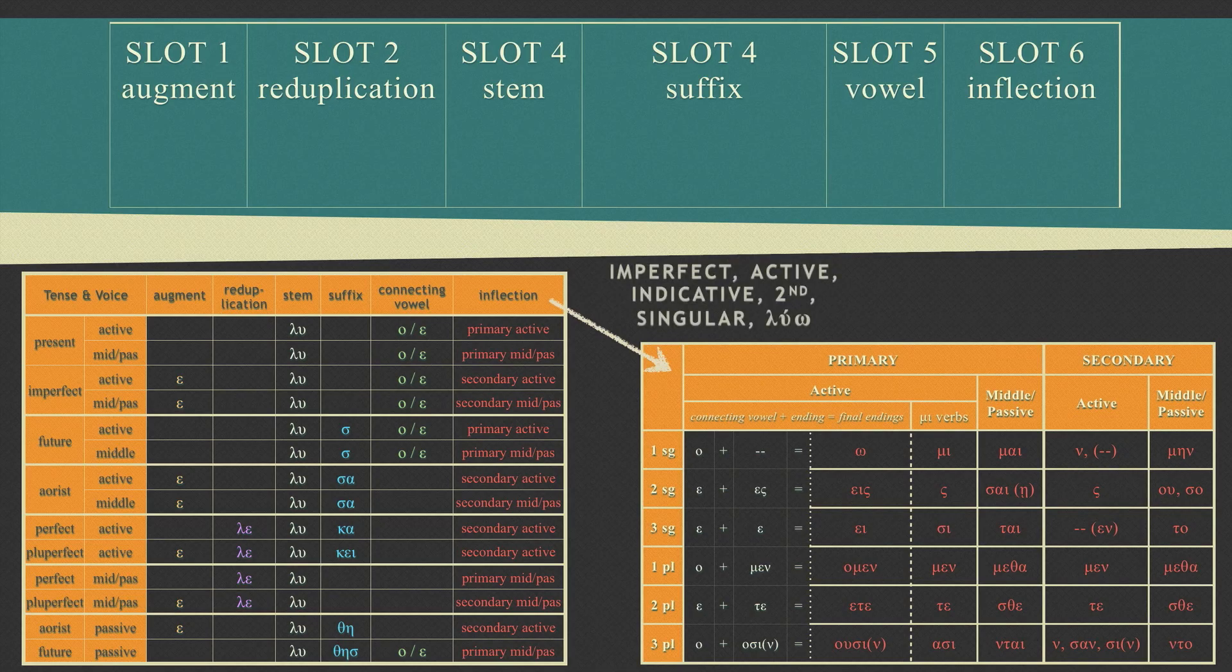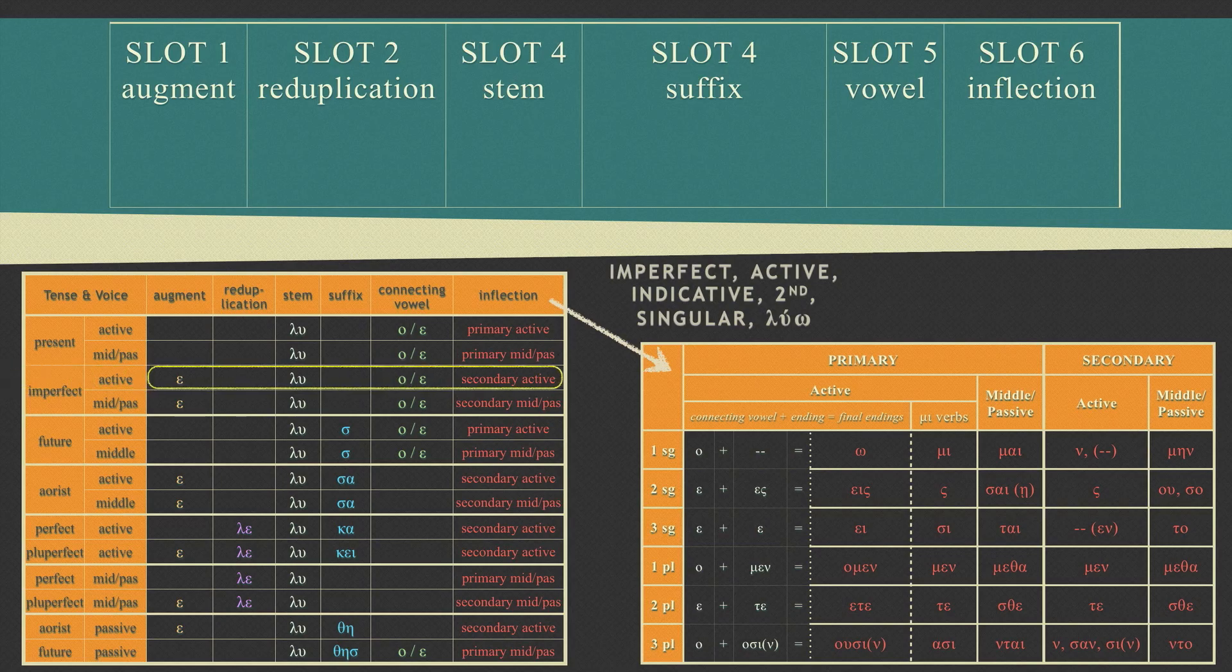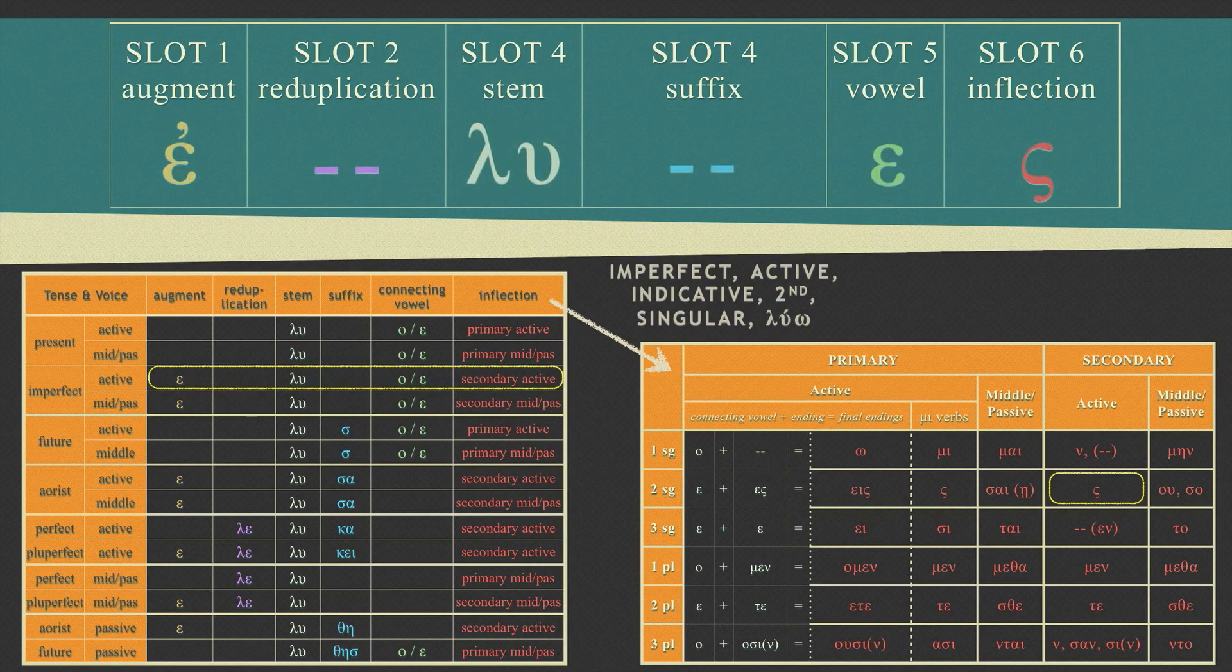What would an imperfect, active, indicative, second person singular form of Lua look like? Looking at our slot machine table, we see that the tense voice combination of imperfect active would build onto the stem by taking an augment, a connecting vowel, and secondary active endings. Looking at our endings table, the second person singular inflection for secondary active endings is a sigma. So the slot machine would look like this, with the final result looking like this.